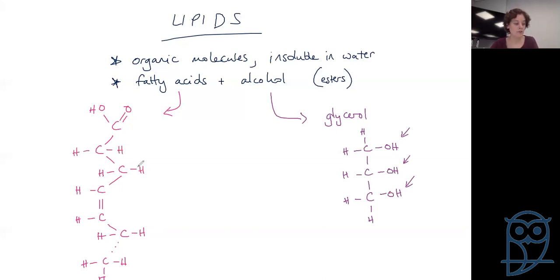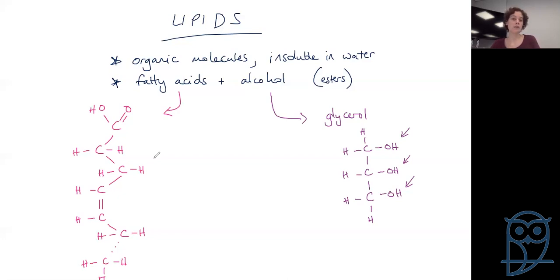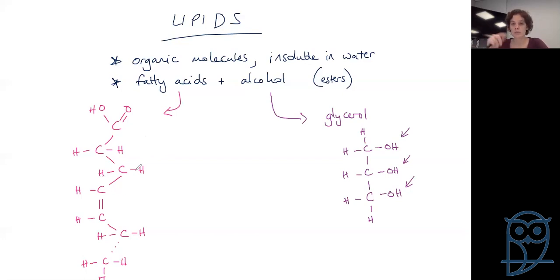A key feature here is that we've got lots of carbon-hydrogen bonds. When we talk about releasing energy through respiration, it is these carbon-hydrogen bonds that are broken — so the more carbon-hydrogen bonds you have, the more energy you're going to be able to release. Also remember that the C-H bond doesn't form a dipole, so we don't have hydrogen bonding. We are hydrophobic and completely uncharged for this whole hydrocarbon tail.